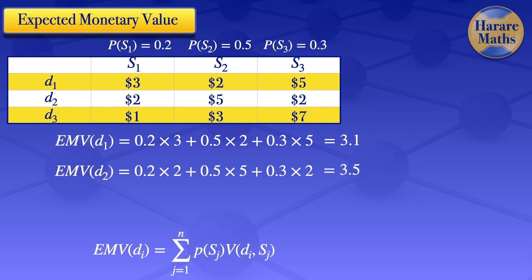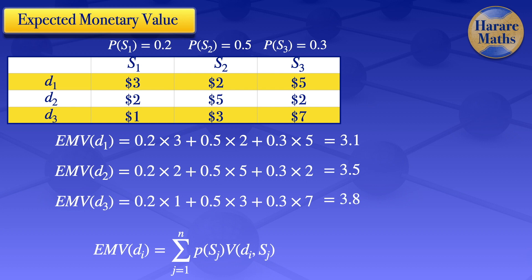For the expected monetary value of decision number 3, we have the probability under state of nature S1, 0.2, multiplied by the corresponding payoff which is 1, plus the probability of S2, 0.5, multiplied by the corresponding payoff which is 3, plus the probability of S3, 0.3, multiplied by the corresponding payoff which is 7. When we evaluate that, we get 3.8.